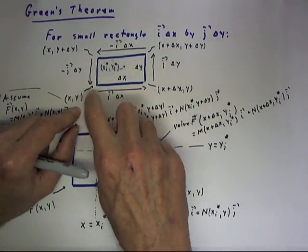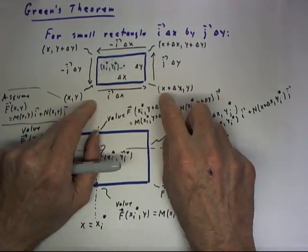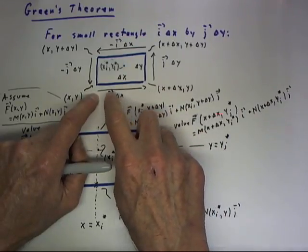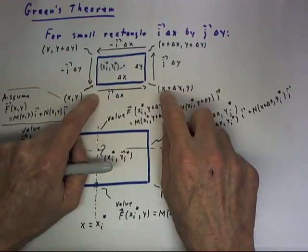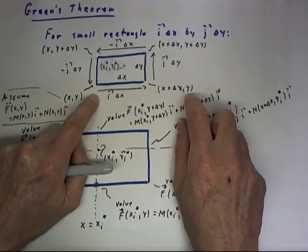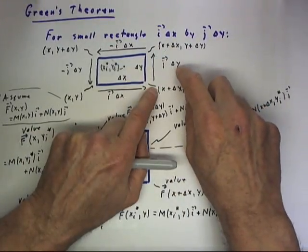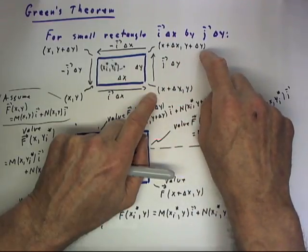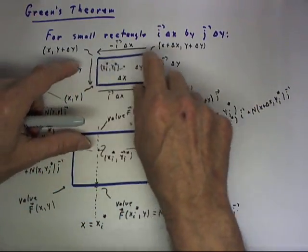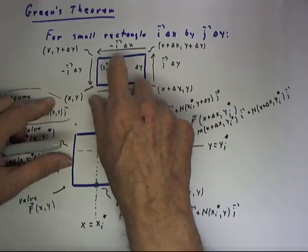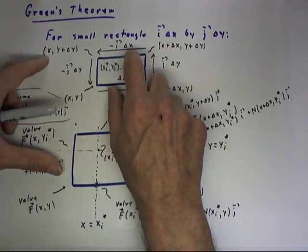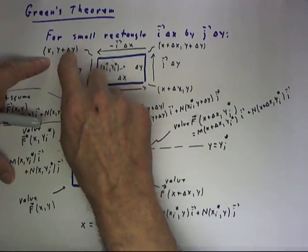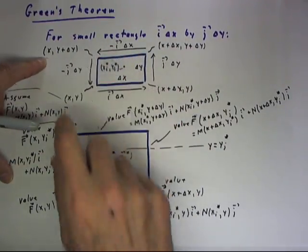Now it should be clear that the corners of the rectangle, and let's look at this picture where they're all labeled, are X, Y. We move delta X in the direction of the I vector. We end up at X plus delta X, Y. We move delta Y in the J direction. And from this point, we're going to be at X plus delta X, Y plus delta Y. And we move in the negative I direction, distance delta X. That's going to put us back at X, Y plus delta Y. So we see the coordinates of the corners of this rectangle.